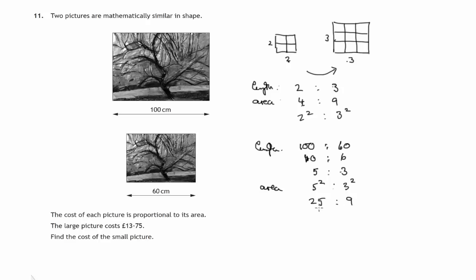Now the cost is proportional to the area, so we could turn this into costs. If the large one costs £25, then the small one would cost £9.